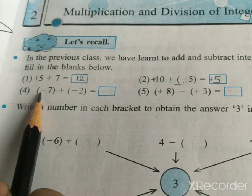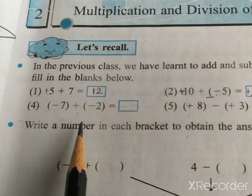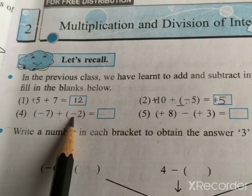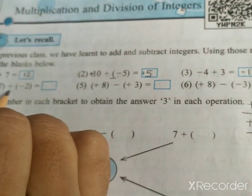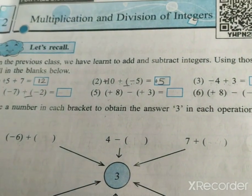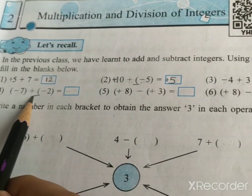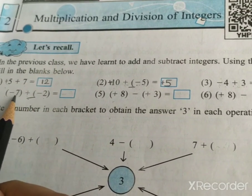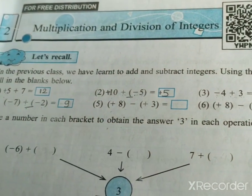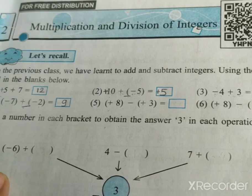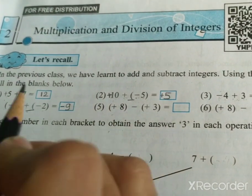Question 4: minus 7 plus minus 2. Here, plus and minus gives minus. So we have minus 7 and minus 2. Minus and minus gives positive. Therefore, 7 plus 2 is equal to 9. But the bigger number is 7, and the symbol of 7 is minus. Therefore, our answer is minus 9.